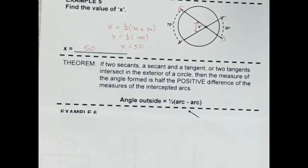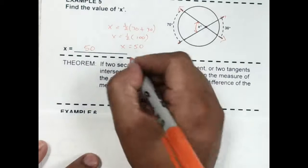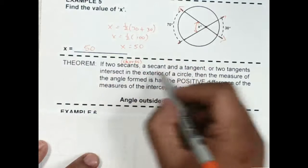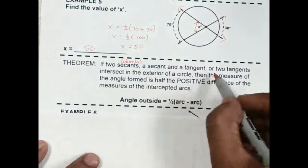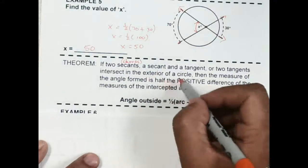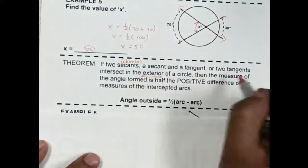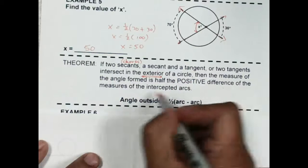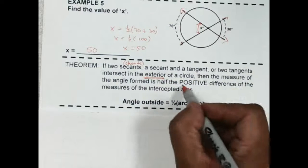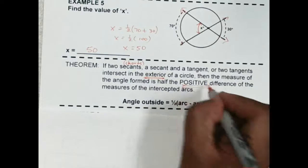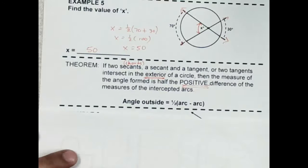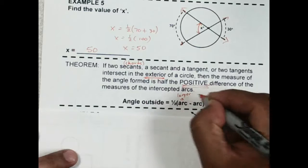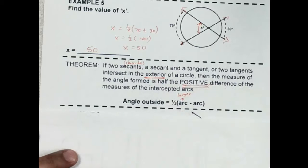All right, next theorem. If two secants, and I guess to be a little more precise, we could also say chords, if two secants, a secant and a tangent, or two tangents intersect the exterior of a circle, so notice exterior, then the measure of the angle formed is half the positive difference of the measure of the intercepted arcs. The positive difference is in caps because that's important as well. Usually what we would do here is we would say the larger arc minus the smaller arc.